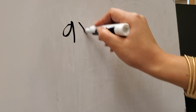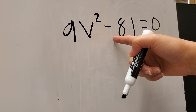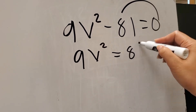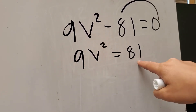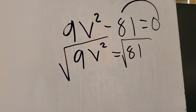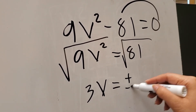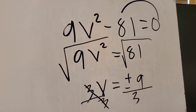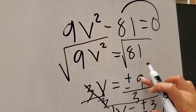Suppose you have 9v squared minus 81 is equal to 0. Before you extract the square root, you need to transpose negative 81 to the other side, so 9v squared is equal to 81. Since the numerical coefficient of v squared is 9, which is a perfect square, we can directly get the square root of both sides. The square root of 9 is 3, and the square root of v squared is v. The square root of 81 is positive and negative 9. We then divide both sides by 3, so v is equal to positive and negative 3. Positive 9 divided by 3 is 3, and negative 9 divided by 3 is negative 3.